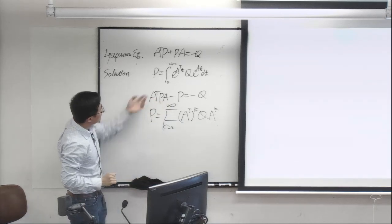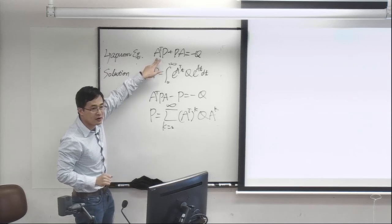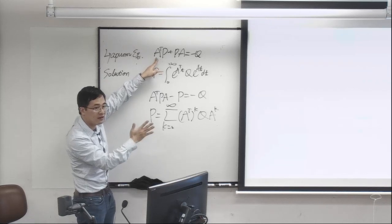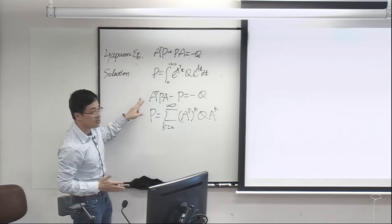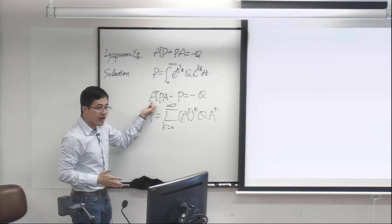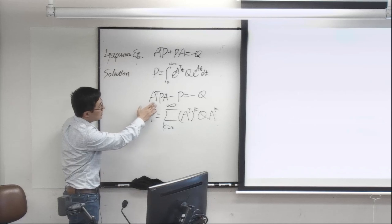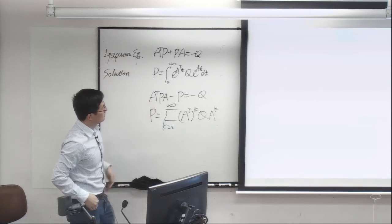For our purposes, if A is stable — meaning the associated system x-dot equals Ax is stable — then all eigenvalues of A are on the left half plane, and the solution is guaranteed to exist. The same applies in discrete time: if the system x_{k+1} equals A x_k is stable, the solution is guaranteed to exist.